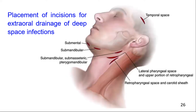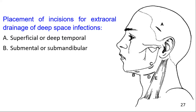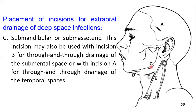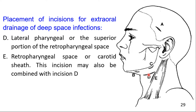Different incisions are used for extraoral drainage of deep space infections. The temporal approach (A) is used to drain superficial or deep temporal space infections. Incision B in the submandibular area is used for submental or submandibular space infections. Incision C in the posterior submandibular area drains the submandibular or submasseteric space and may be combined with incision B for through-and-through drainage of the submental space, or with incision A for temporal spaces. Incision D is for the lateral pharyngeal or superior retropharyngeal space, and incision E is for the retropharyngeal space or carotid sheath, and may be combined with incision D.